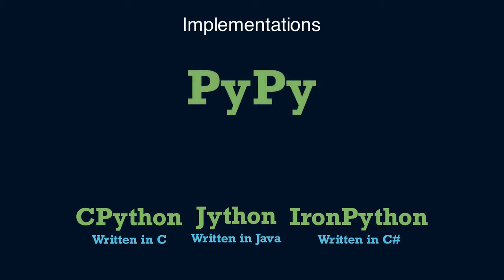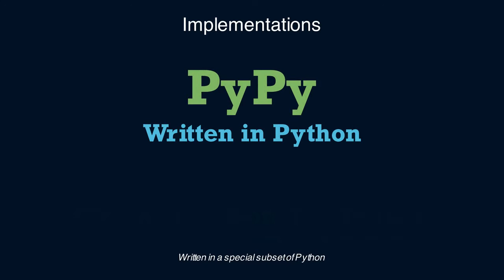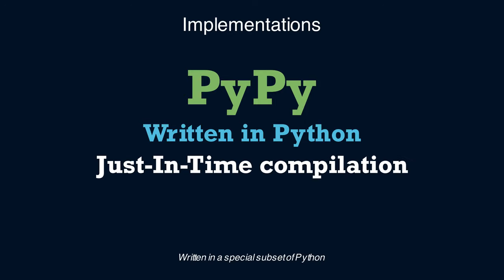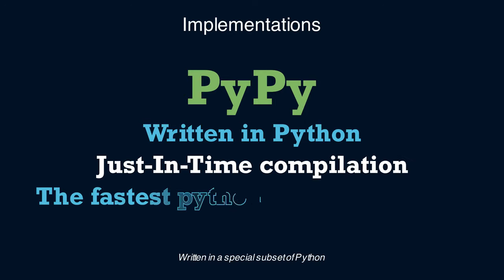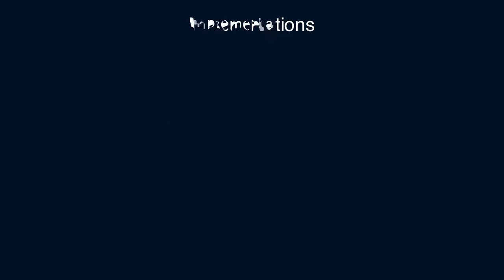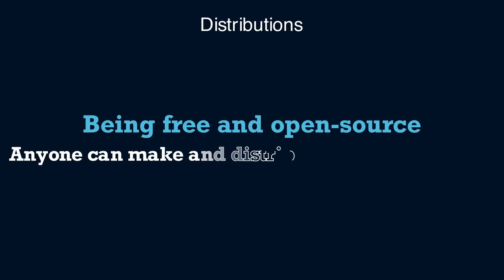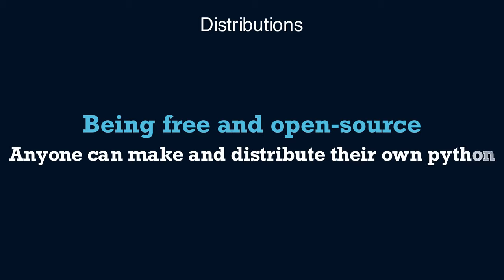PyPy is the Python written in Python — confusing, but it's almost like that. PyPy brings just-in-time compilation to Python, and that makes it the fastest Python. Again, because of its open source nature, anyone can repackage and redistribute their own Python distribution.